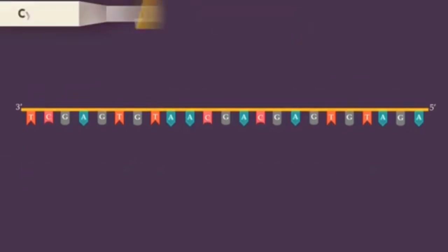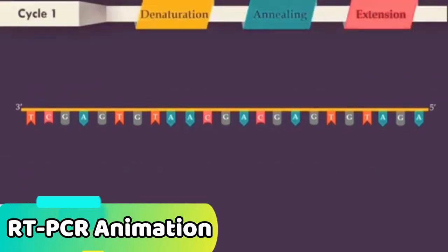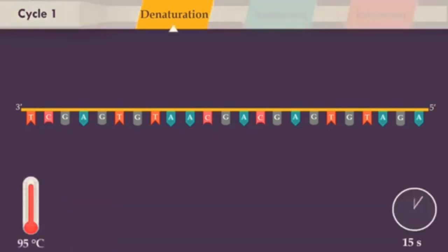PCR consists of a series of thermal cycles, with each cycle consisting of denaturation, annealing, and extension steps. Denaturation step consists of heating the reaction chamber to 95 degrees Celsius, and it is used for denaturation of the double-stranded DNA template.